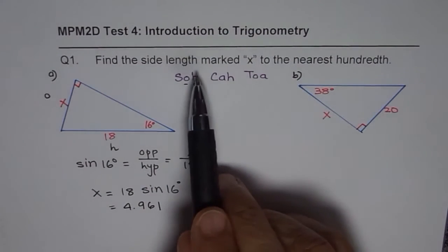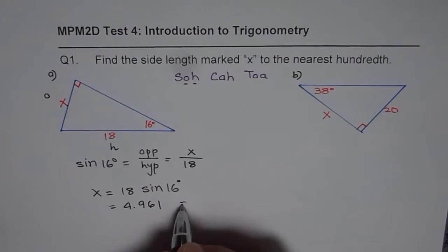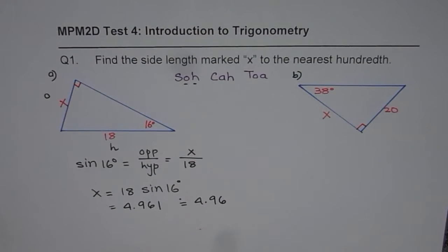So we get the answer as equal to 4.961. Now the question asks for nearest hundredth. So let us round it to the nearest hundredth, which in this case will be 4.96. That is the answer. Let us do the second question now, Part B.